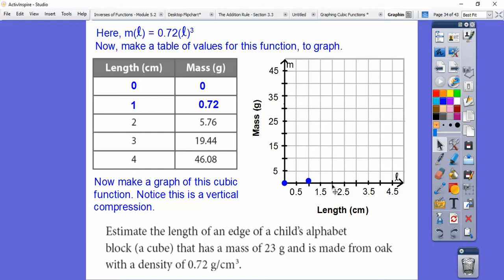2, 5.76. So there's 2, here's 5, so a little bit above 5, something like right there. 3, 19.44. There's 3, there's 20, so a little bit below. And then that last one goes way up there. So there's that cubic function. Now remember, the other side would be over here going down like this. It's a vertical compression.